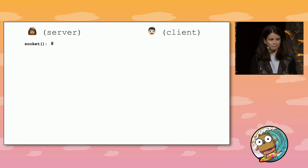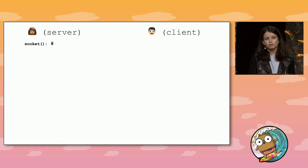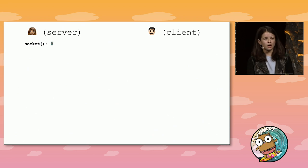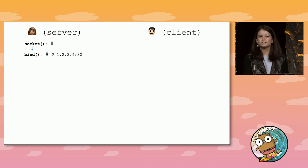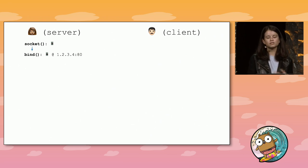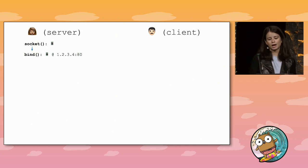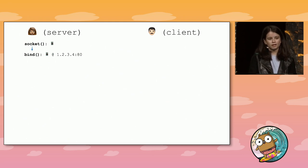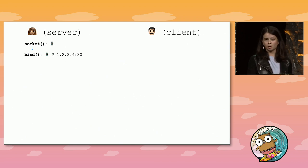Let's say our server is represented by a person named Alice, and our client is represented by a person named Bob. First, our server will call socket to create a listening socket that clients can send connection requests to — like Alice procuring a phone so Bob can call her. Next, the server calls bind. The bind syscall binds a socket to an IP-port pair so that clients can locate the socket. In the phone analogy, this is like Alice getting a SIM card so she has a number that Bob can call her at.